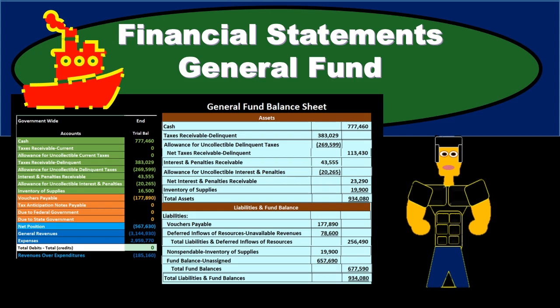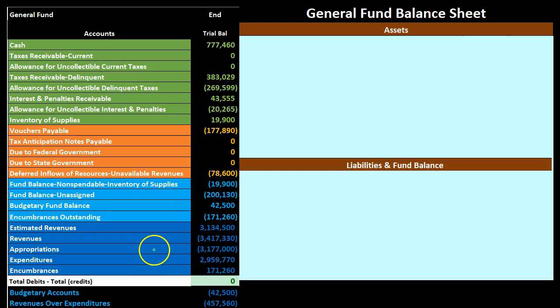In this presentation we will take a look at an example putting together financial statements related to the general fund. We're going to have our trial balance on the left side and put that information into the blue area on the right side. The trial balance is going to be broken out in assets in green, the liabilities in orange, and the equity section — or assets minus liabilities — the fund balance type section in light blue.